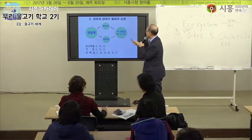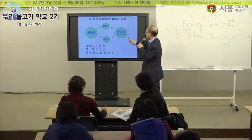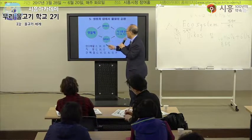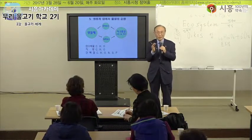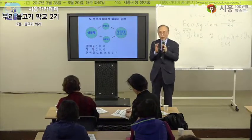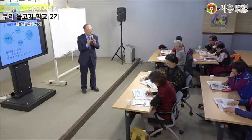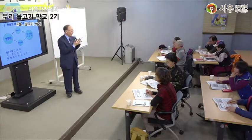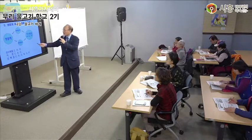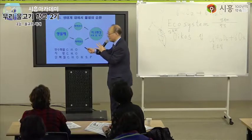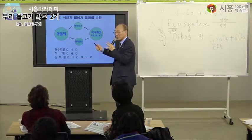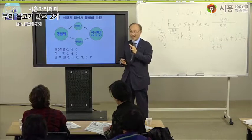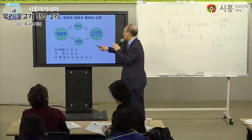물질순환에 대한 내용입니다. 물질은 흐르지 않고 순환한다는 말인데, 모든 생물체는 세포로 구성되어 있고, 세포 속에는 탄소, 수소, 산소, 질소, 유황, 인과 같은 화학원소로 구성되어 있습니다. 이러한 화학원소가 식물의 뿌리로 흡수돼 식물의 세포로 들어갔다가, 동물의 몸 속으로 들어갔다가, 사람의 몸을 만들어냅니다.